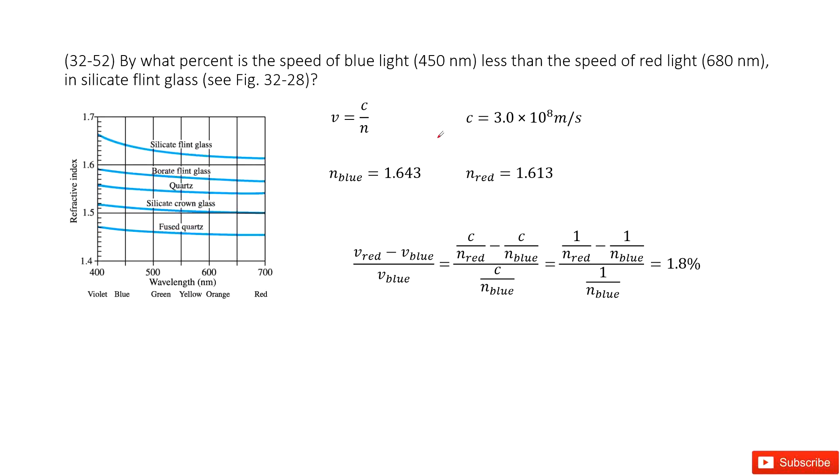Chapter 32 is about light, reflection. So now we look at this picture. We need to know by what percentage is the speed of blue light less than the speed of red light.